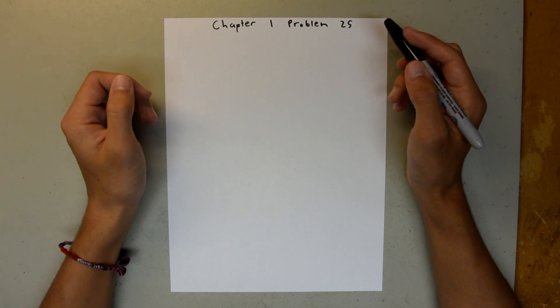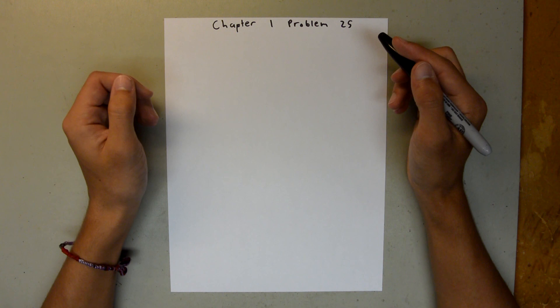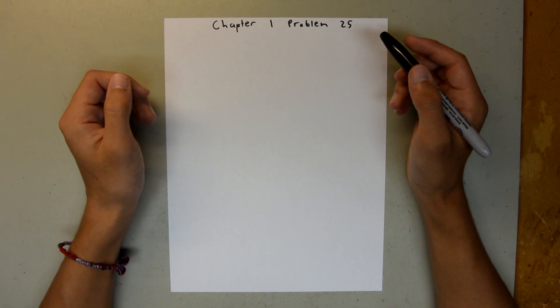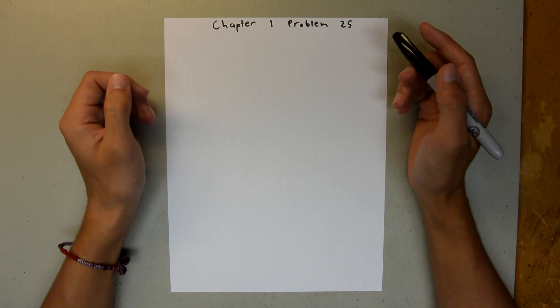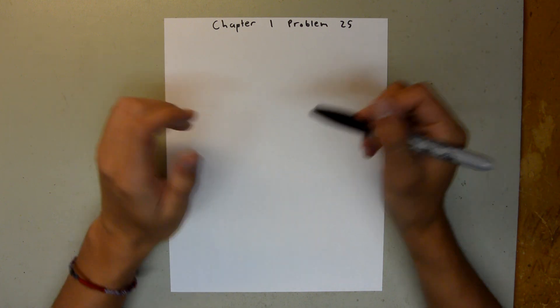Chapter 1 is all about measurement, and in Problem 25, we are given the density and the mass of an iron atom, and asked to find the volume of an atom, and the distance between two that are next to each other.